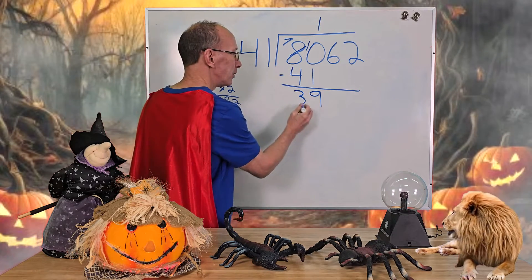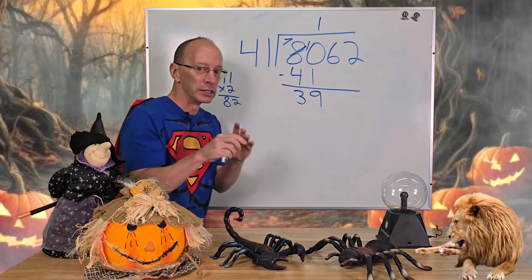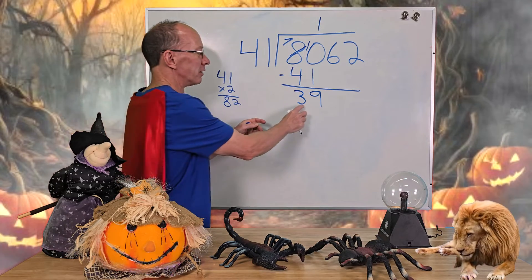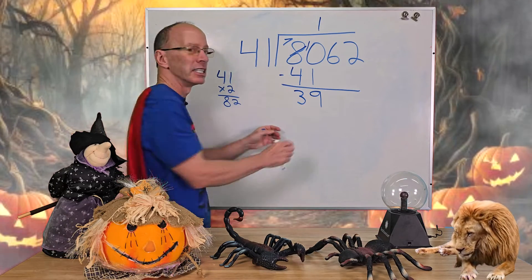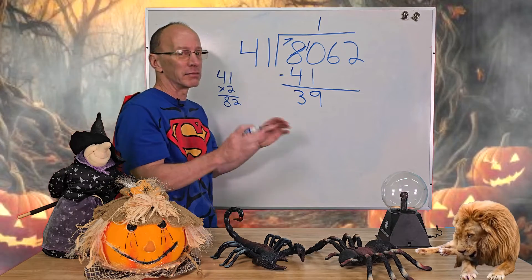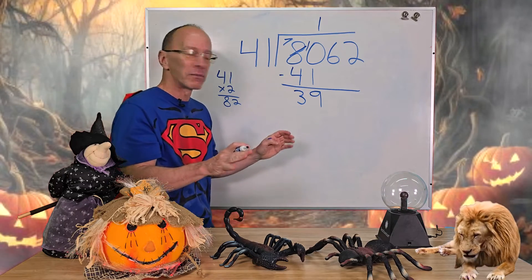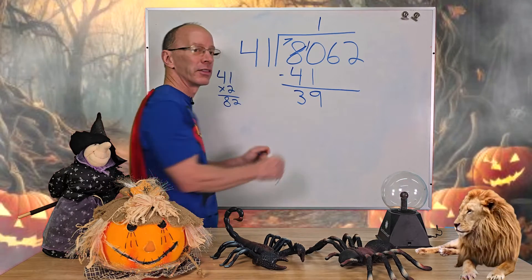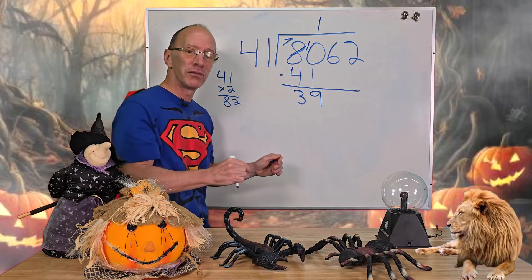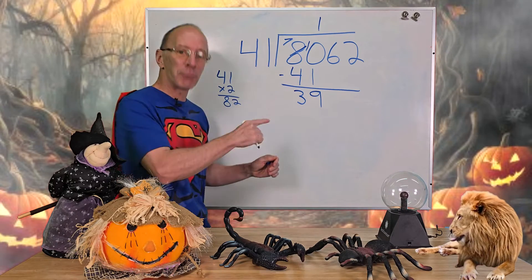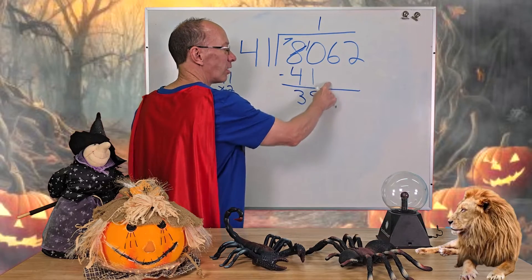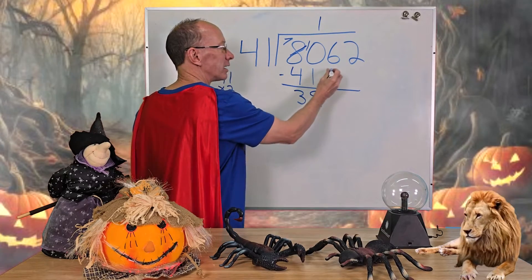Now some of you are getting spooky and scary — oh my goodness, there's a double-digit number for our answer. That's okay. You can't fit 41 into 39, can you? Now remember, the next step with division: you drop the next number down. We're going to drop this 6 all the way down here.